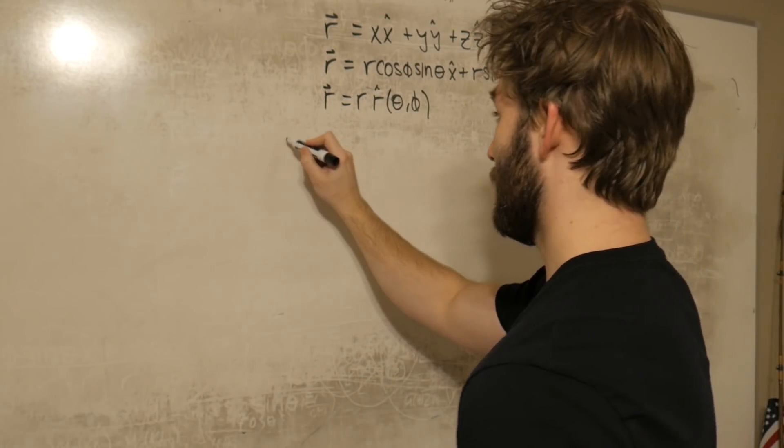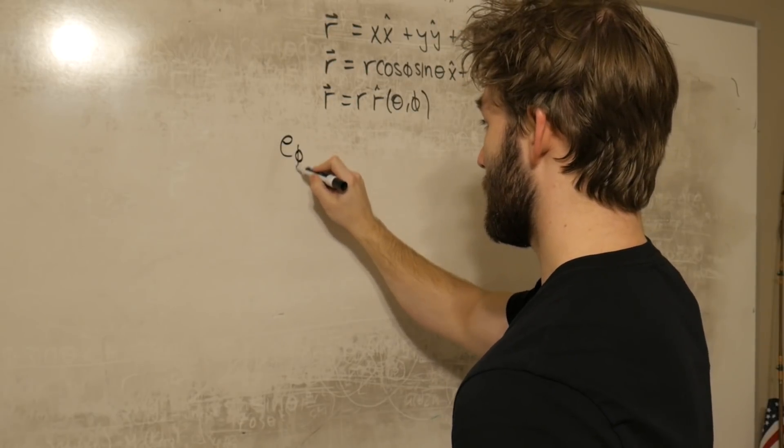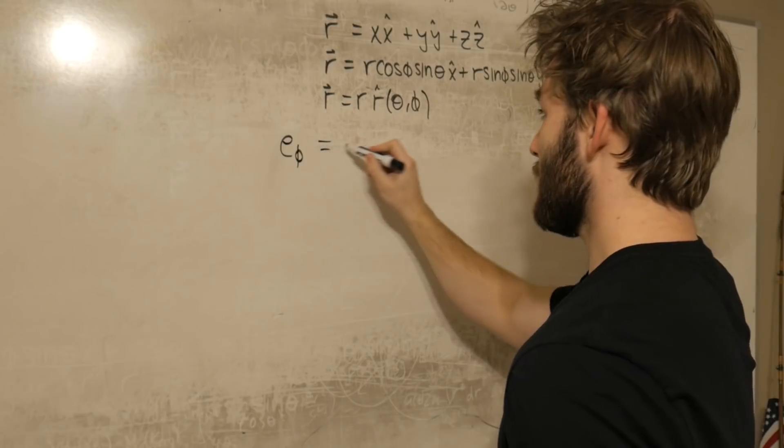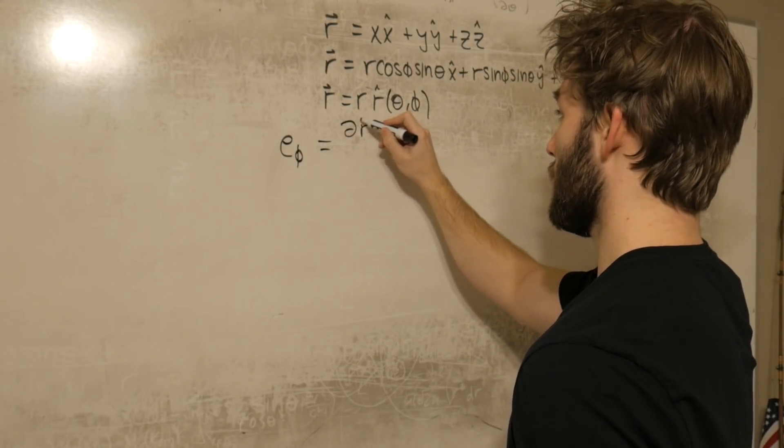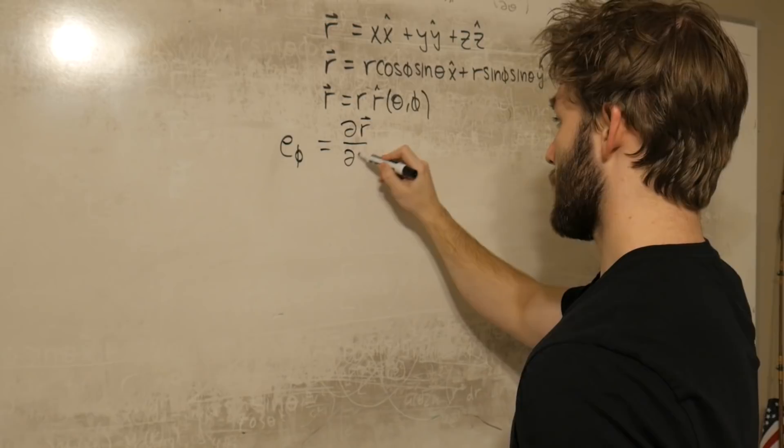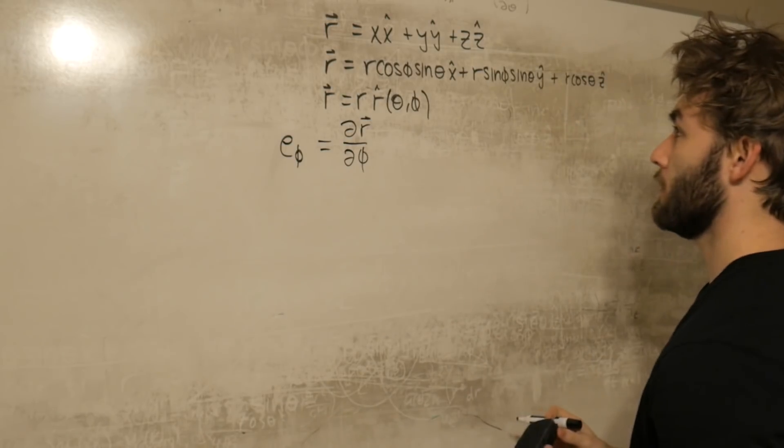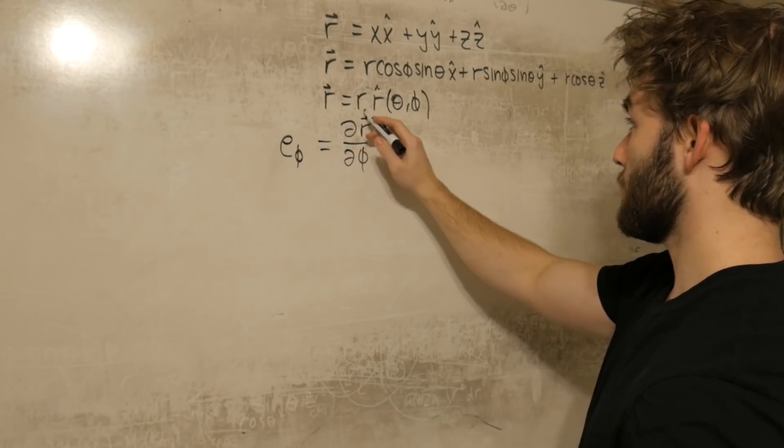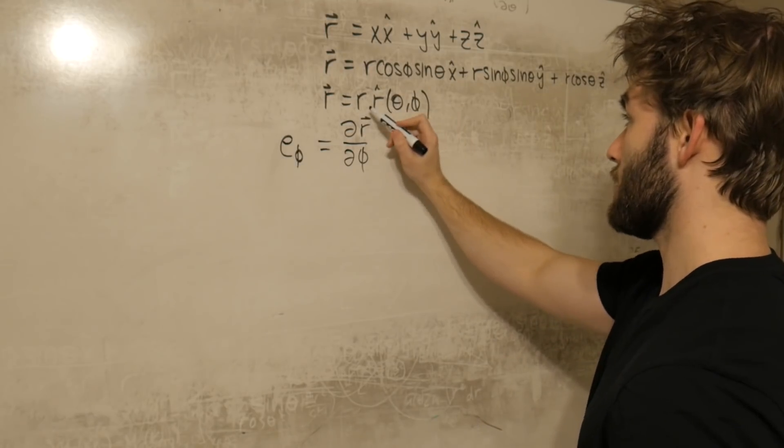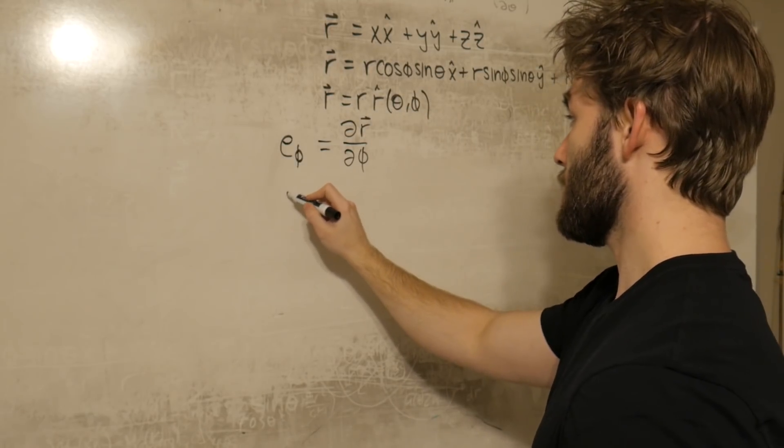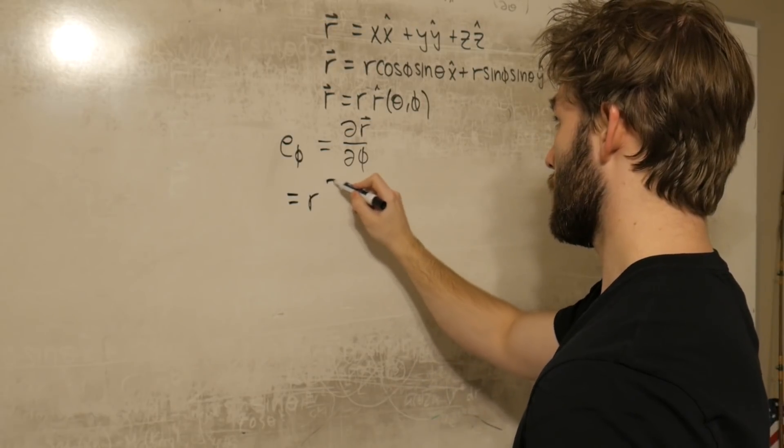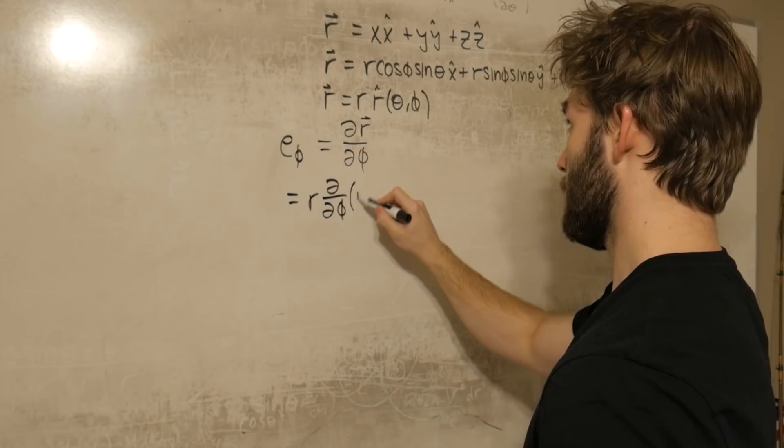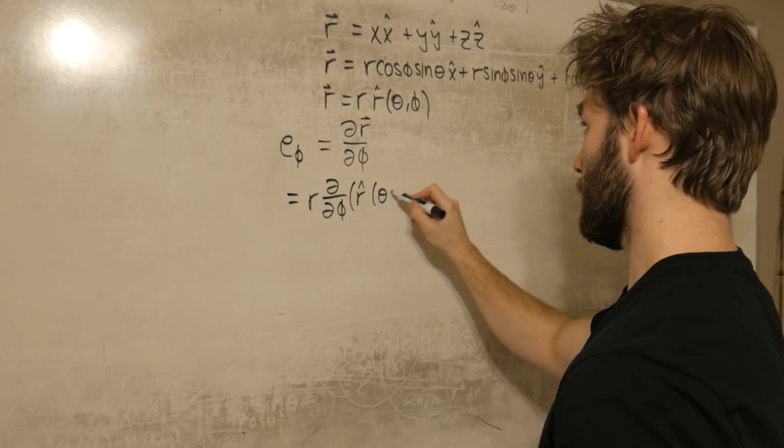We're making progress. The last thing that we need to find now is a basis vector that describes the phi direction. And we can do that the same way that we've been doing the other ones. We're going to take the derivative of r with respect to phi. And here we go. It's blind to the r's yet again. If we're looking at this equation, it's blind to this r.